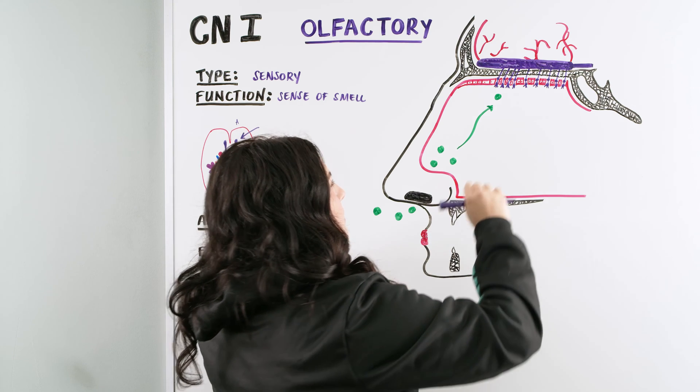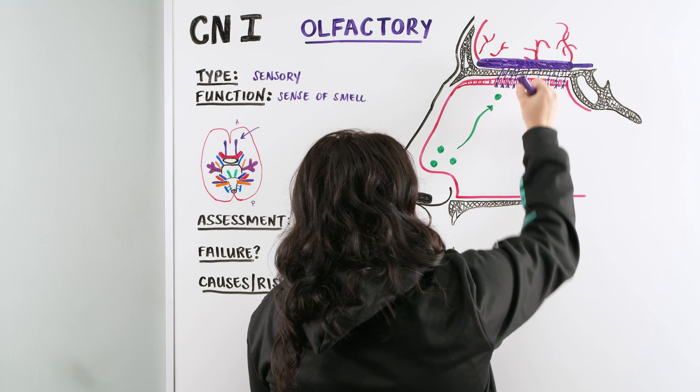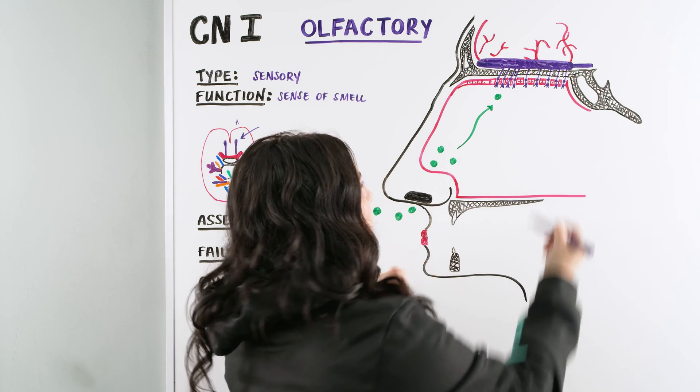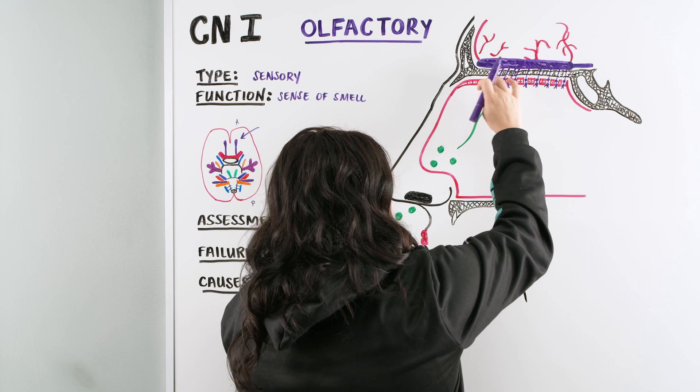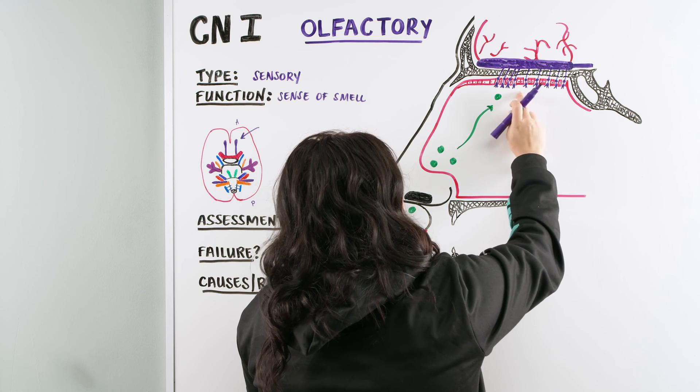But the most important thing that we're looking at here is we have this cribriform plate of the ethmoid bone, which is right here. They have nice little canals for the nerves to come through. And then we also have the epithelium layer here, which is where the nerves come through and they project a little cilia out.